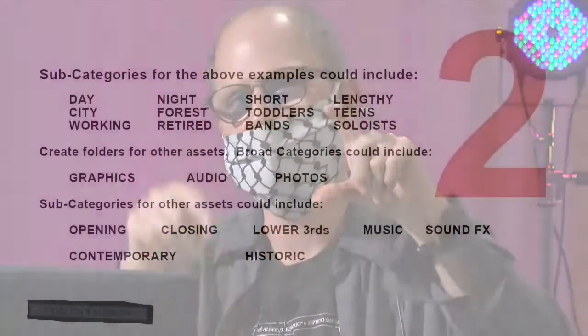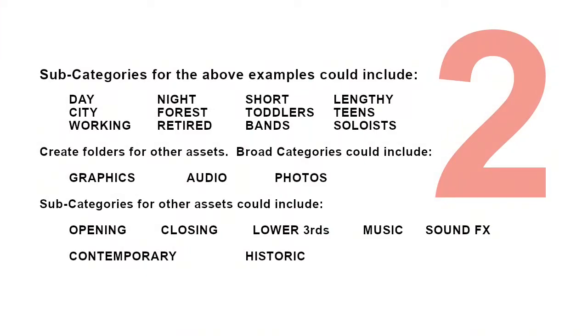Another workflow could be: instead of renaming each and every clip, look at a particular category of clips — a certain type of material. Maybe it's stuff you shot in the woods, or footage shot in the daytime versus at night, short material versus lengthy, city versus forest, toddlers versus teens. It depends on your project — working people, retired people, and so on. That will help you figure out a good place to put all this material.